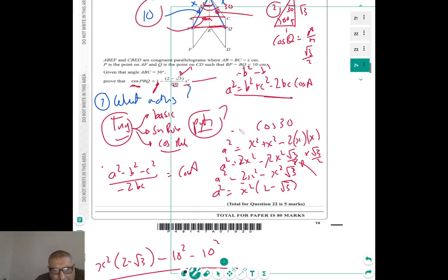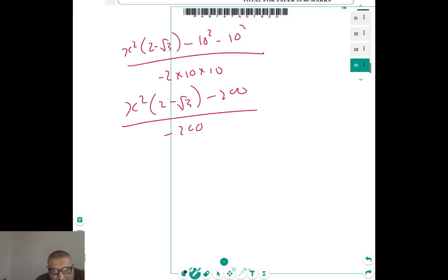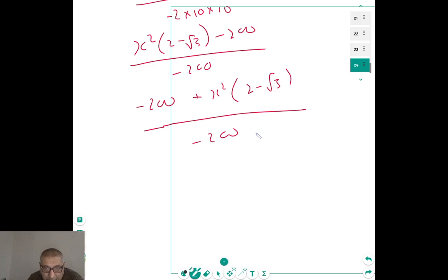And this is where use of fractions comes in, because I'm just going to switch these around. So I'm going to be minus 200 plus X squared times 2 minus root 3 all over minus 200. Okie dokie, and at this point you have fractions coming. And what I can do is I can break this down into two fractions.